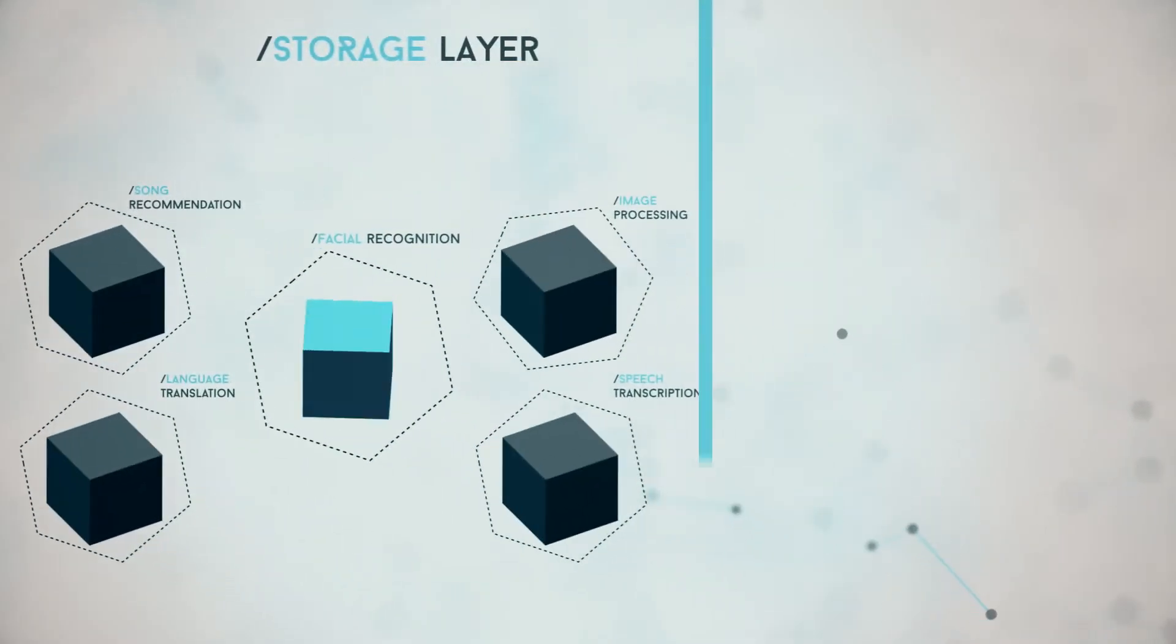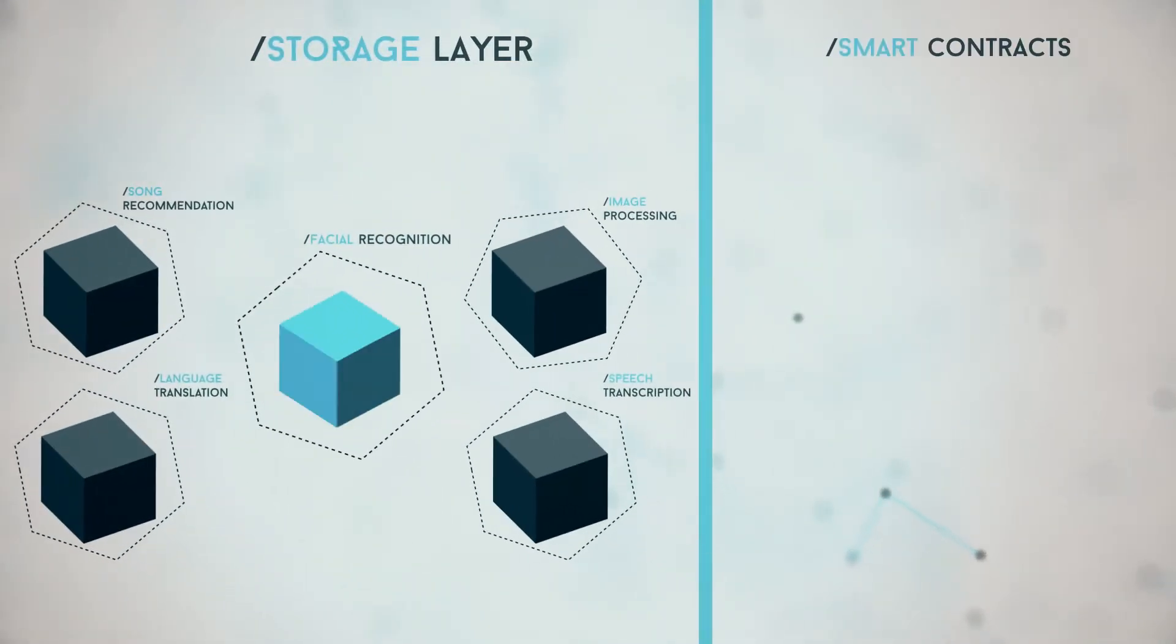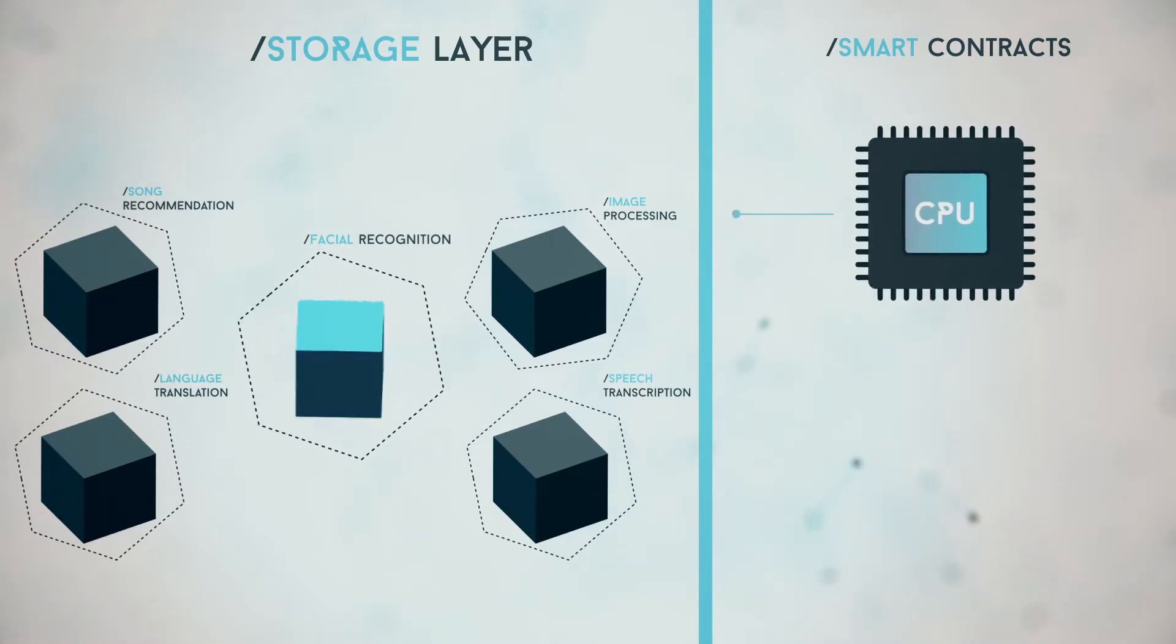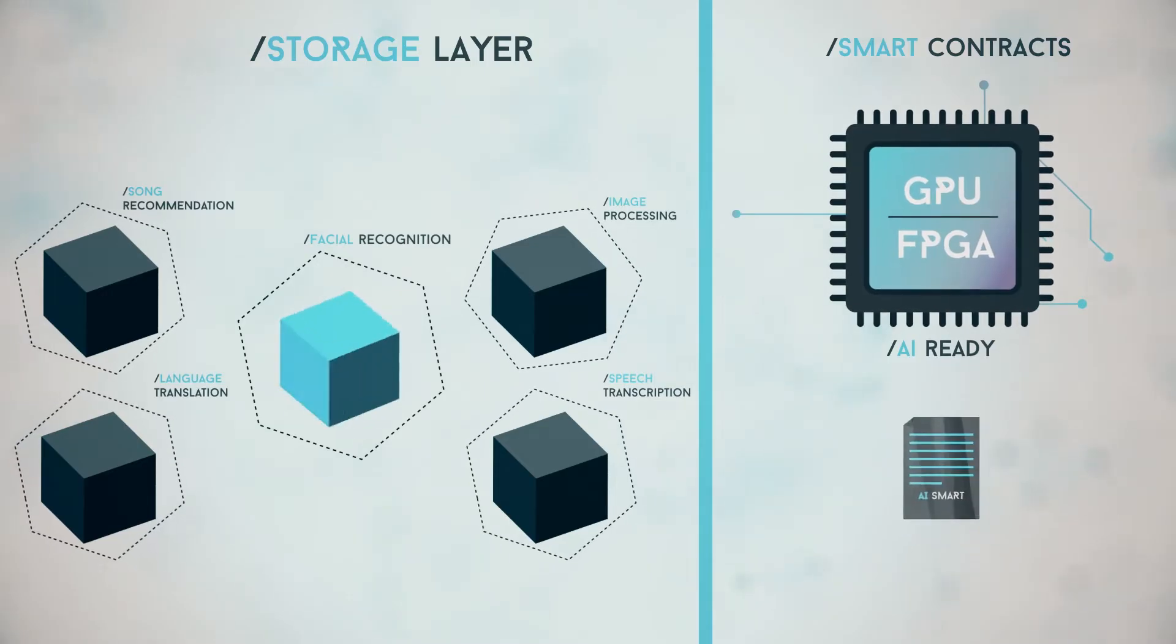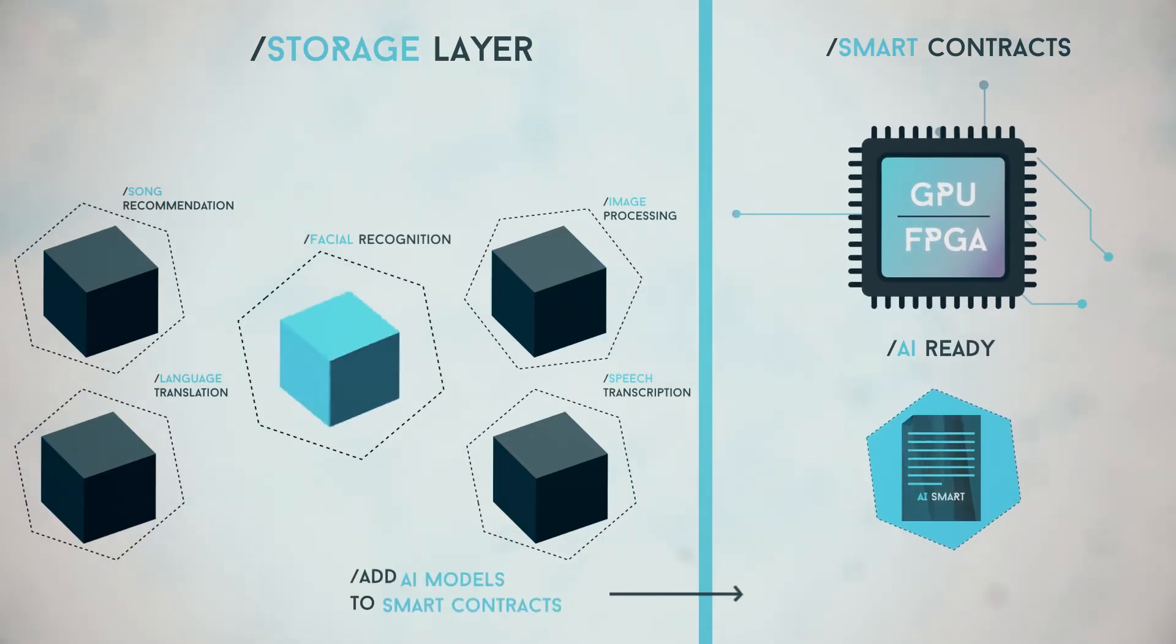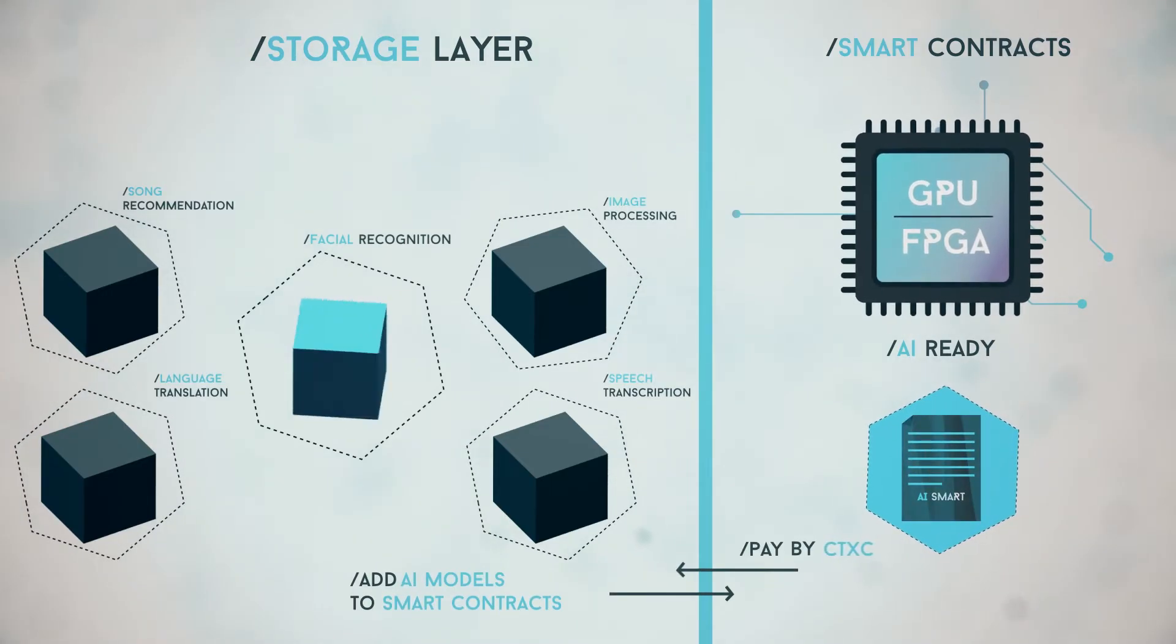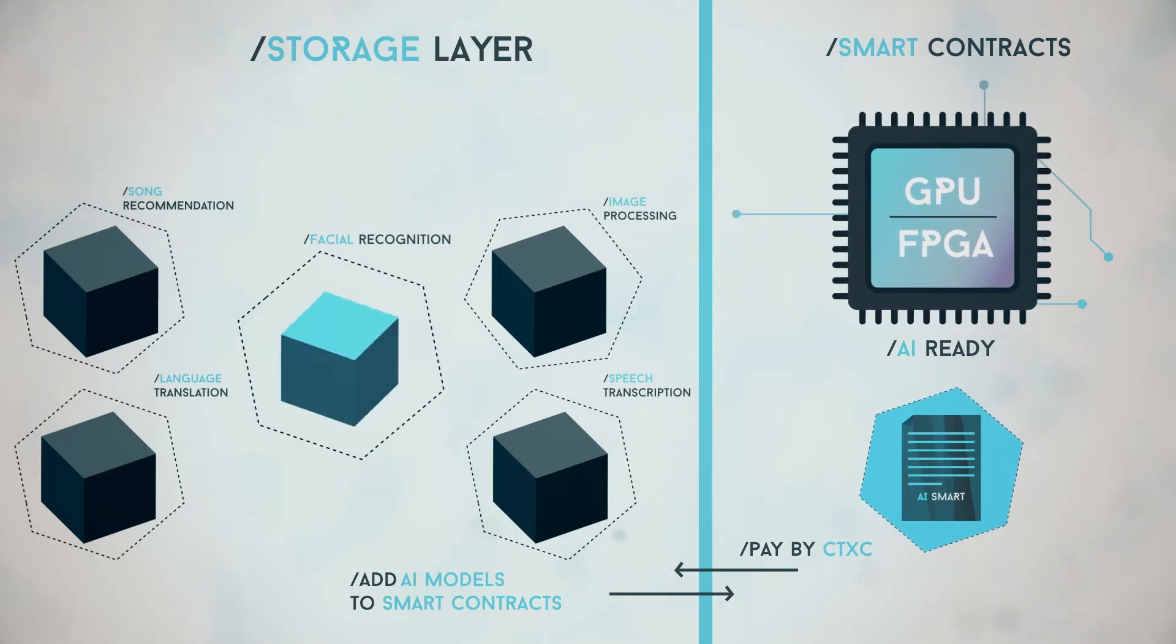On the other hand, the design of the Cortex virtual machine gives the CPU's job to the GPU or the FPGA, making it AI ready. DAP developers can then access and execute these AI models by paying CTXC, the Cortex native token.